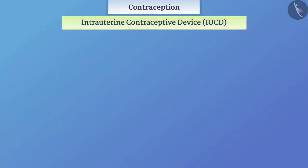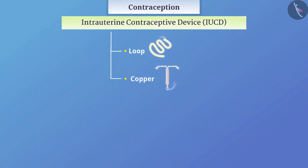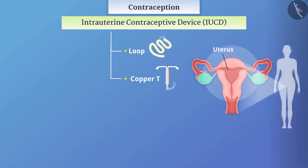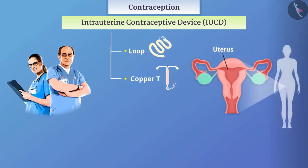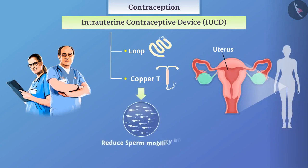Intrauterine contraceptive devices or IUCDs such as loops, copper-T, etc., are placed in the uterus by experienced doctors or nurses. These devices reduce sperm mobility and their fertilization ability.